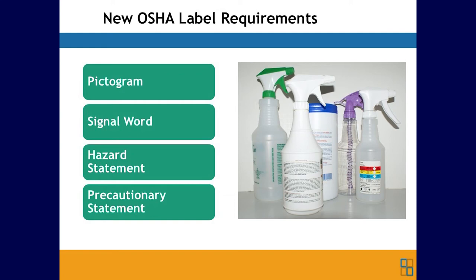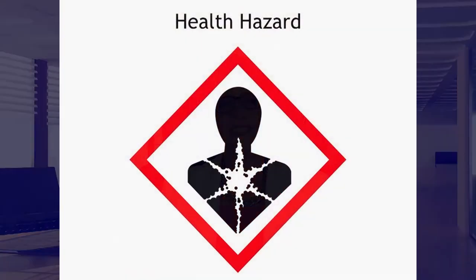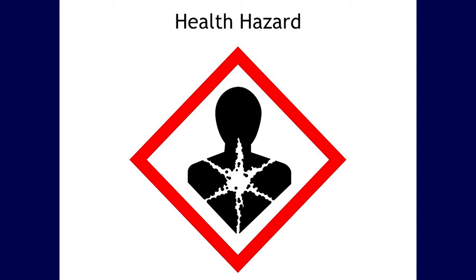Training needs to include the new label elements: a pictogram, a signal word, a hazard statement, and a precautionary statement. There are nine different pictograms — all required to be diamond-shaped with a red border, a black pictogram, and a white background. The label must also have the product identifier. The health hazard pictogram — if you see it on a container — indicates the product could be carcinogenic, cause mutagenicity, reproductive toxicity, respiratory sensitization, target organ toxicity, or aspiration toxicity.